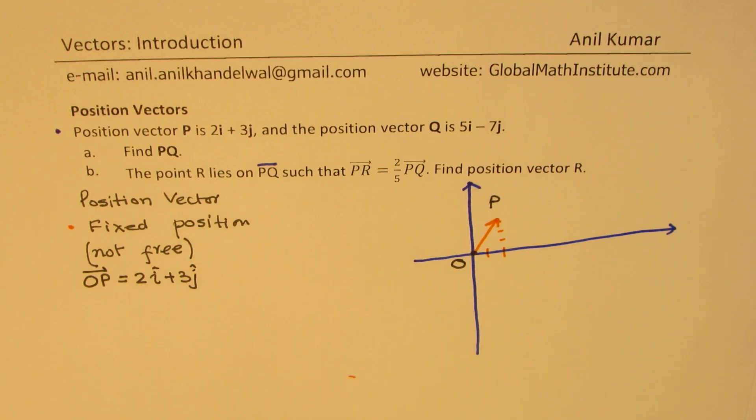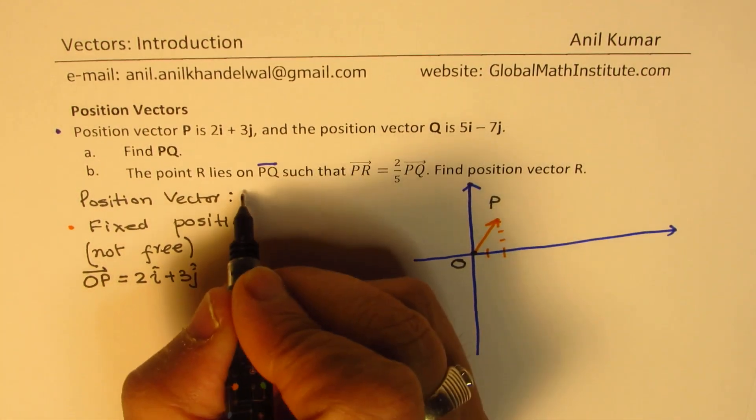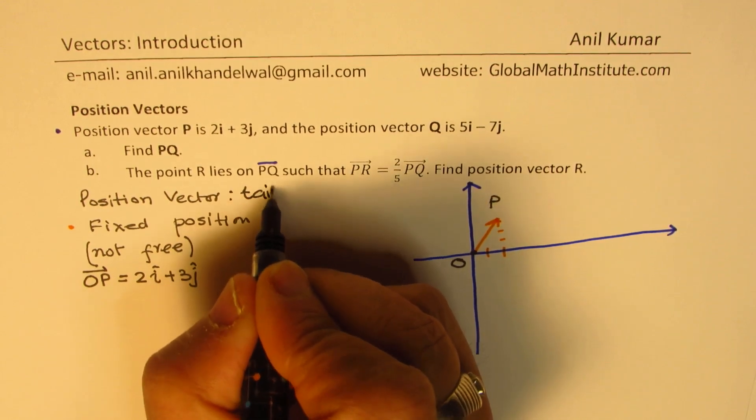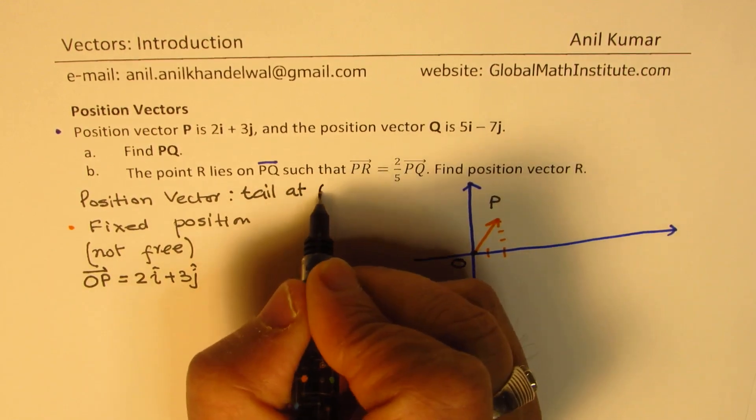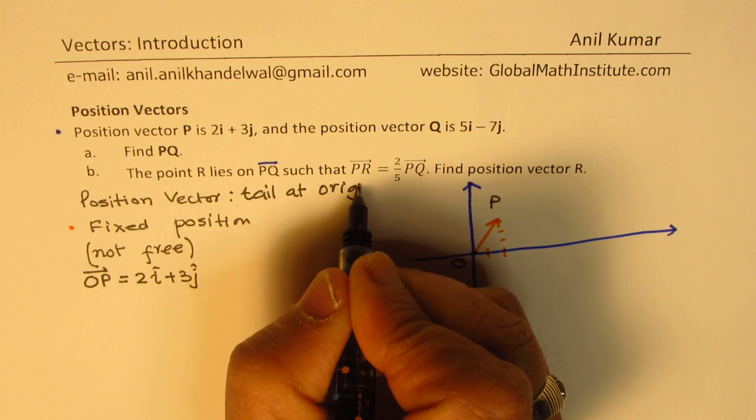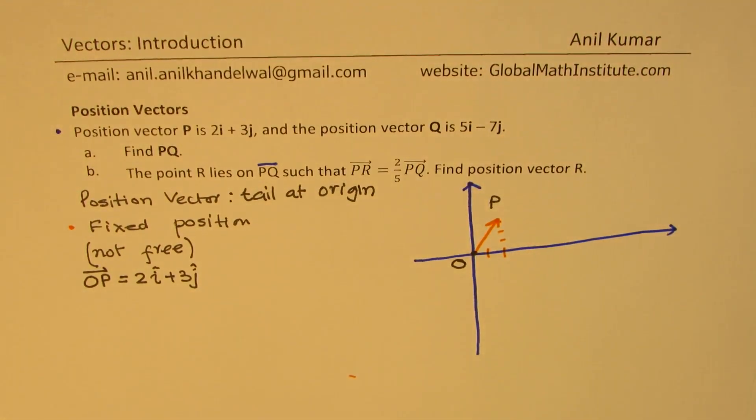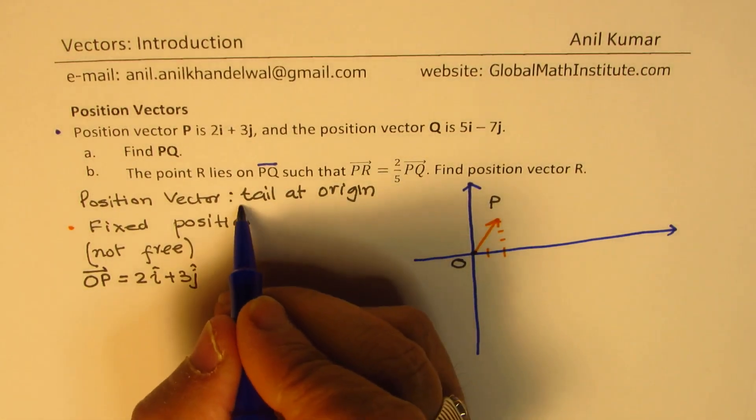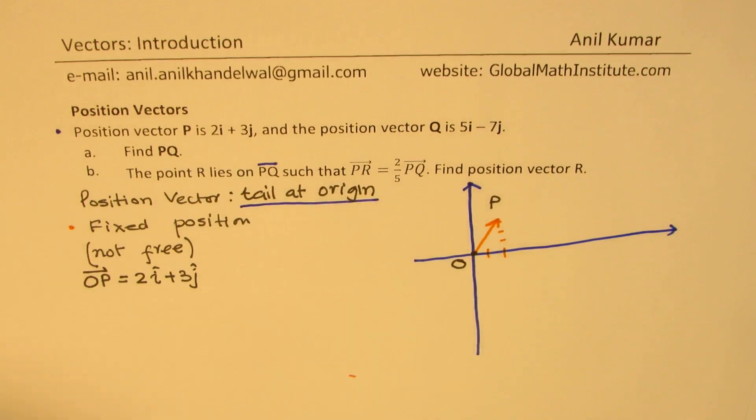So whenever you fix the tail, tail at origin. That is very important to remember. So for a position vector, it is fixed and the tail is at origin. So that is our vector P.